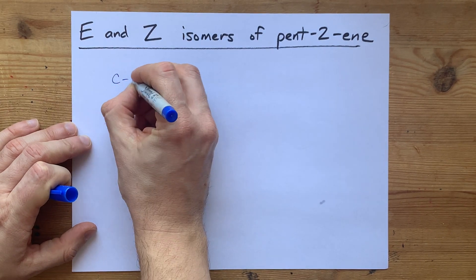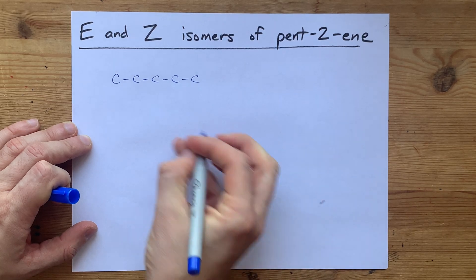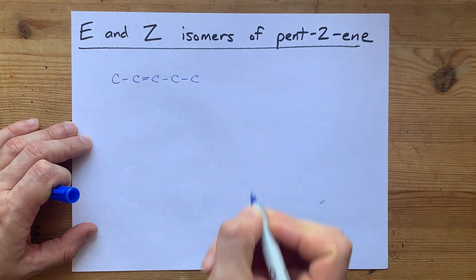I'm going to draw those five carbons here. This is just a rough sketch of the molecule so we can get our bearings. Double bond starting at carbon-2.